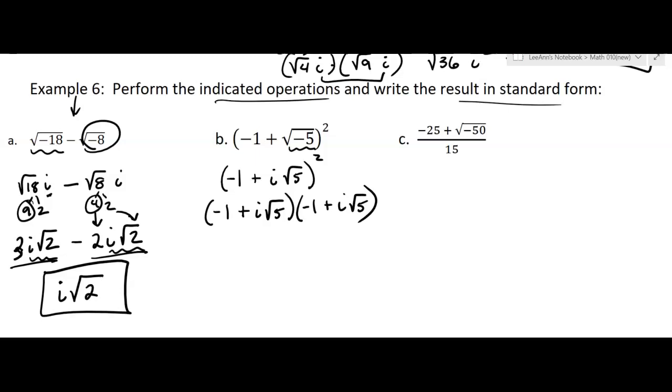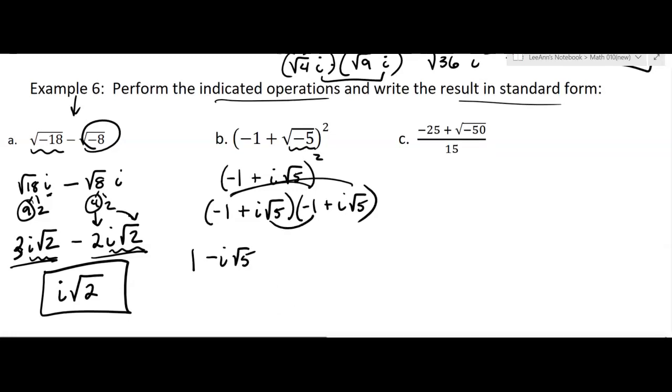Okay, but I'm squaring this, right? Squaring a binomial, that's what it is. It's in that form. So negative 1 times negative 1 is 1. Then I'm going to have the outers, which is going to be negative i square root 5. I'm going to have the inners, which is negative i square root 5. And then I'm going to have the last, which is going to be i squared times the square root of 25, right?